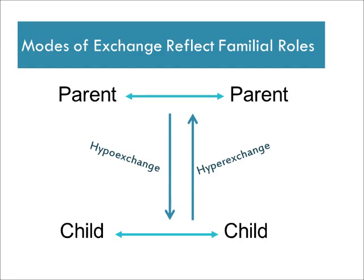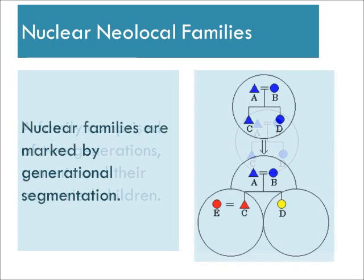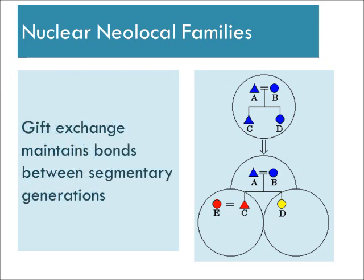This brings us to the question of the structure of the American family, which is prototypically conceived as a nuclear neolocal family — a family comprised of two generations: parents and their unmarried children. Nuclear neolocal families in the United States are marked by generational segmentation. When the children grow up, they leave home to get married and create their own nuclear families.